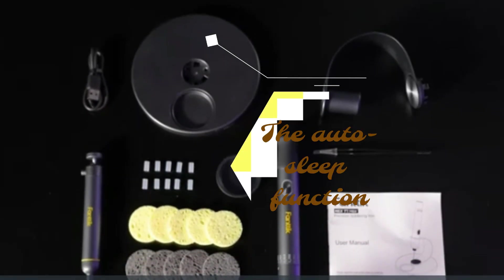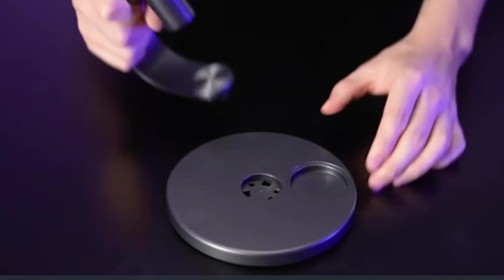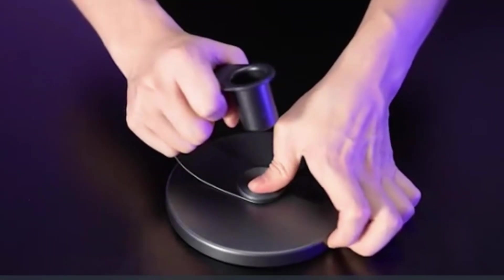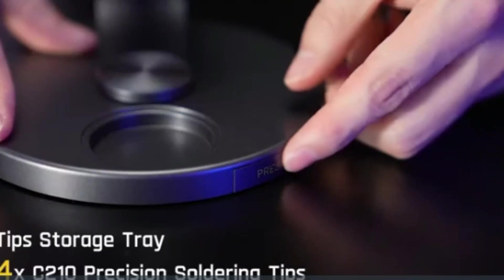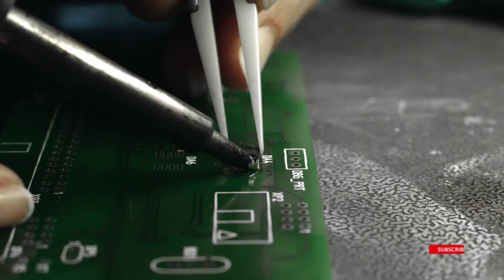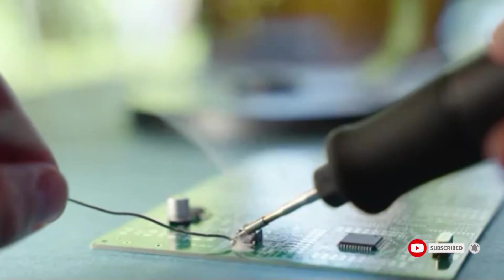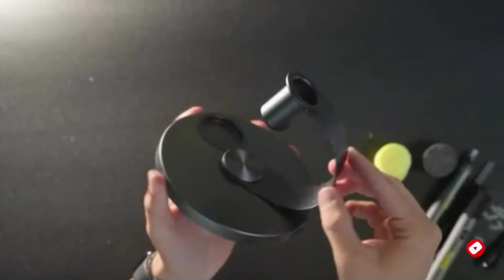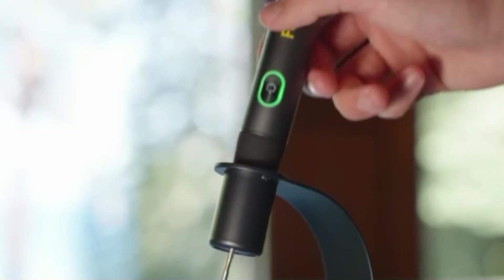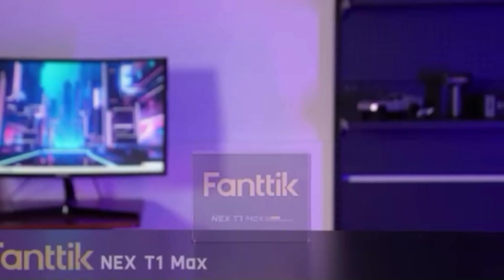Another smart feature is the auto-sleep function. If the iron isn't used for a while, it enters sleep mode to preserve battery life and avoid overheating, great for safety and longevity. It resumes heating almost instantly when you pick it up again, which is a small touch that makes a big difference in usability.